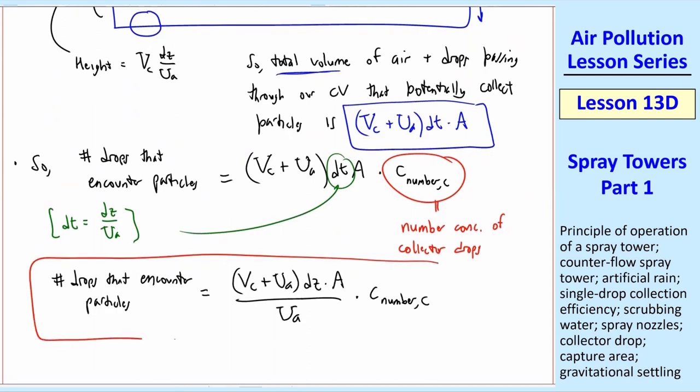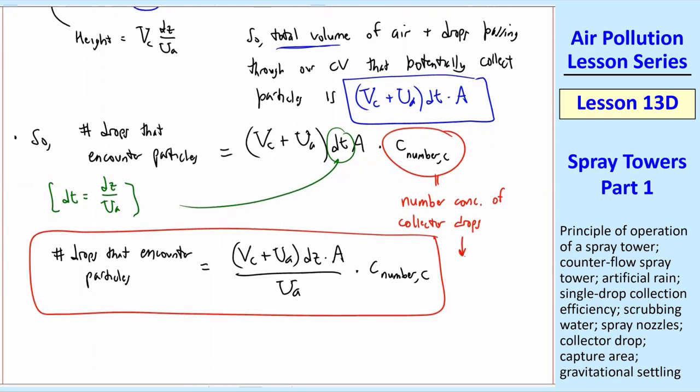The number of drops that encounter particles is vc plus UA quantity times dz times A over UA times C number C. Remember that this number concentration is the number of drops per volume, usually expressed as millions of particles or drops per volume, since there are so many of them. Notice also that dzA is the volume of our control volume, just dz times cross-sectional area A. I'll call this equation 3.